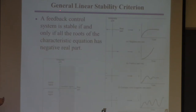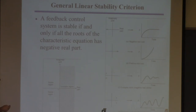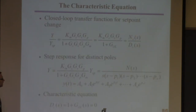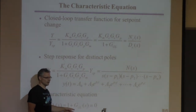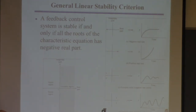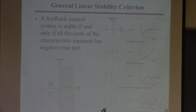The general stability rule: a feedback control system is stable if and only if all roots of the characteristic equation have negative real parts. You take the closed-loop poles, plot them in the complex plane — if they're all in the left half-plane, the system is stable; if even one is in the right half-plane, it's not.